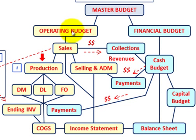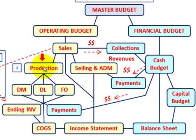Under our operating budget, the first budget we have to develop is our sales budget, and then once we know our sales budget we can determine our production budget. Really, a production budget is just the number of units that we're going to have to produce. So knowing our production budget, we can then determine a direct materials budget, direct labor budget, and factory overhead budget.